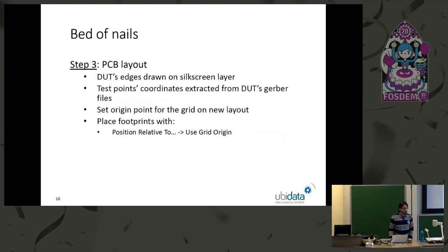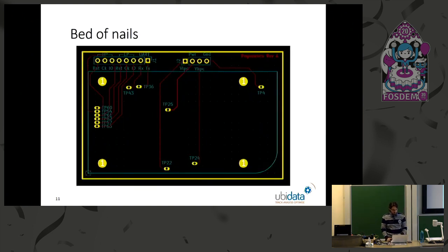Then the final step is to place those components on the PCB you're going to produce. So we decided on the silk screen to draw the edge of the device in the test, so that the operator cannot be confused on the position to put it in. Then the very important point is to get the test points coordinates right. You have to be sure that the coordinates are the same when you take them on the PCB you test and on the one you're going to design.